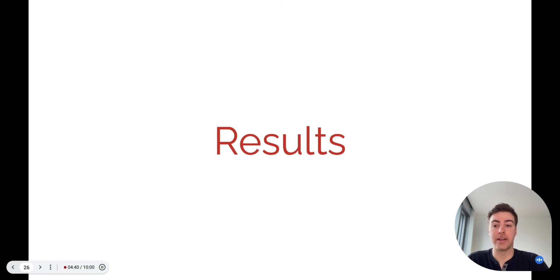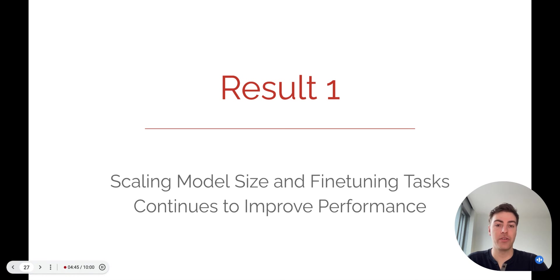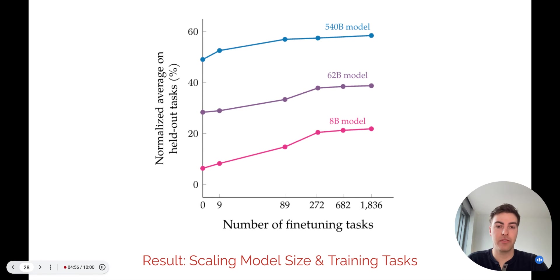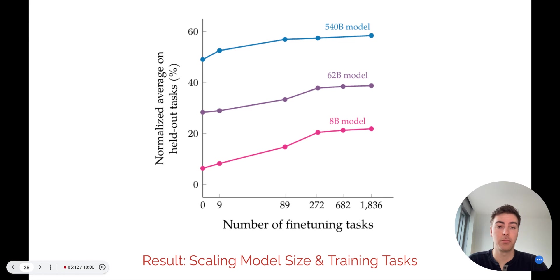Next, I'll walk through our results and analysis in more detail. The first result: we test whether we would still see benefits to task generalization by scaling model size and the number of fine-tuning tasks much beyond prior work. We find both of these continue to notably improve performance. Here you can see significant improvements in model size from the pink line to the purple line to the blue line. And as we increase the number of tasks along the x-axis, performance continues to rise even at 1,836 tasks, despite some diminishing returns.